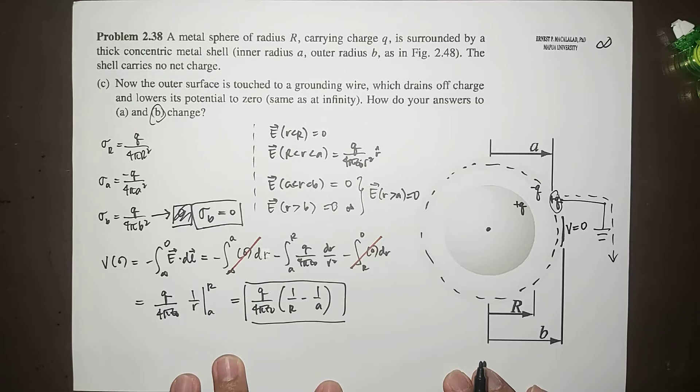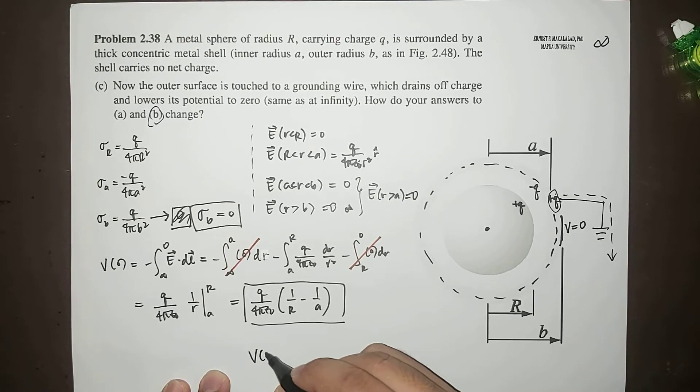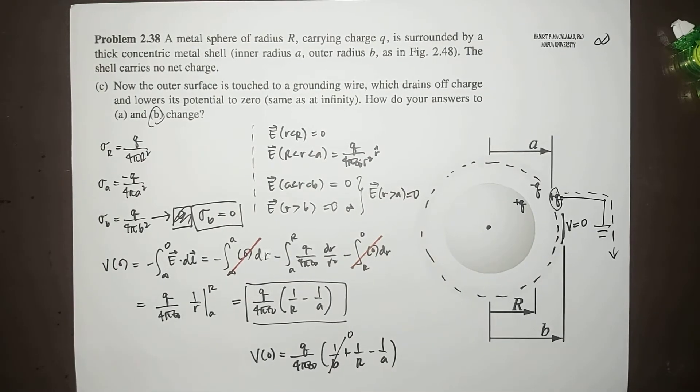Okay, so that means if we're going to compare this to our previous results, wherein the potential is equal to Q over 4πε₀ times one over B plus one over R minus one over A. Okay, so you will notice that this term is zero, why? Because the contribution of this region